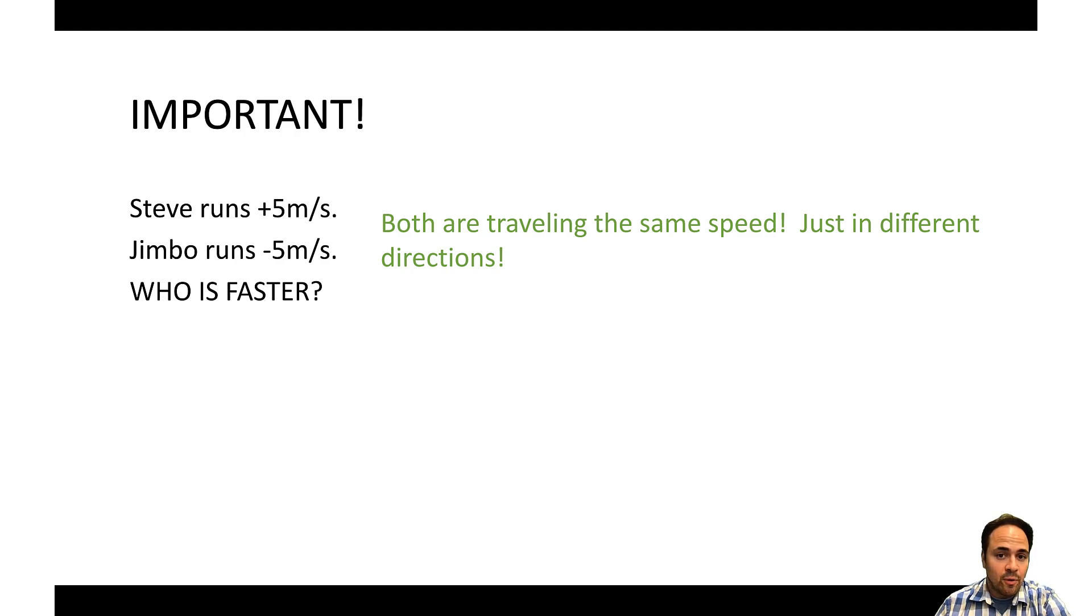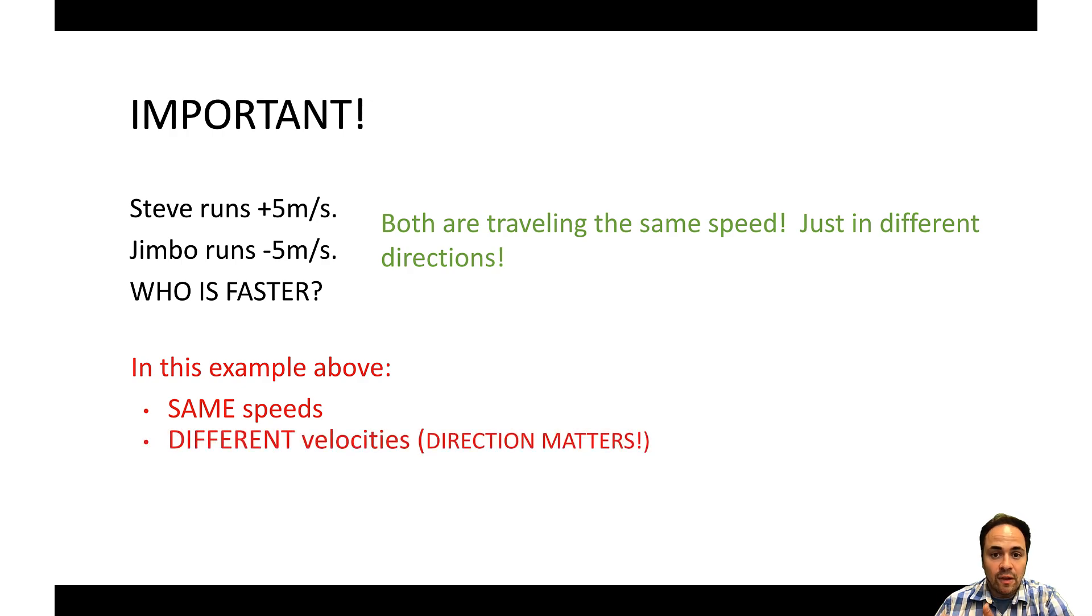So really important to note from that last example, they have the same speeds, but they have different velocities. Speed and velocity are similar, but they're not exactly the same, because velocity has that added direction component. You can have two things moving the exact same speed, traveling in different directions. So in that example, they may be traveling at the same speed, but they have different directions and therefore different velocities.